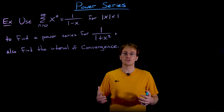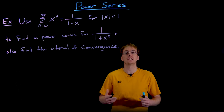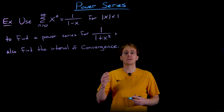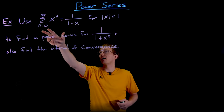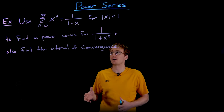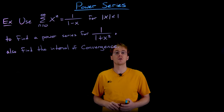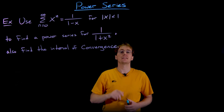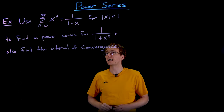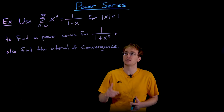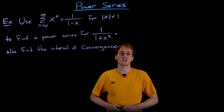Later we'll talk about building power series representations from scratch using Taylor or Maclaurin series, but it's not always necessary to reinvent the wheel. Often we can find a power series for a new function by using what we know about a power series for an old function. In this example, we'll use the geometric power series — the sum from n equals 0 to infinity of xⁿ — which converges to 1/(1-x) on the interval |x| < 1, to create a power series for 1/(1+x²).